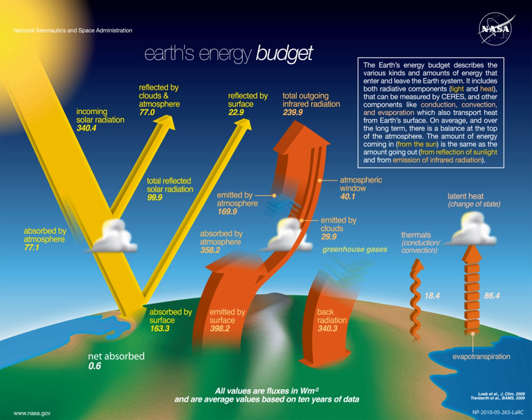Earth's energy budget accounts for the balance between the energy Earth receives from the Sun, and the energy the Earth radiates back into outer space after having been distributed throughout the five components of Earth's climate system, thus powering Earth's so-called heat engine. This system is made up of Earth's water, ice, atmosphere, rocky crust, and all living things. Quantifying changes in these amounts is required to accurately model Earth's climate.